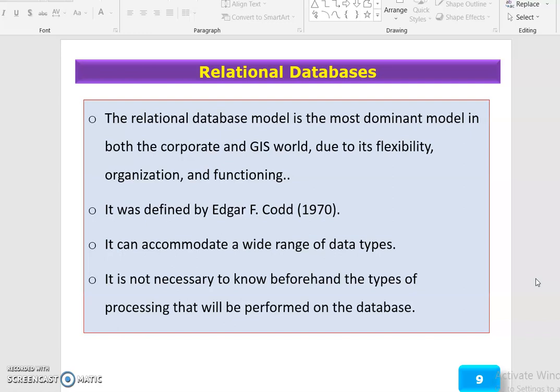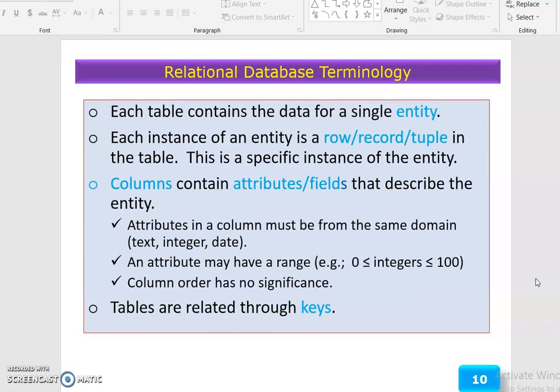Relational database terminology: Each table contains the data for a single entity. Each instance of an entity is a row, record, or tuple in the table. Columns contain attributes or fields that describe the entity. Attributes in a column must be from the same domain - text, integer, date. An attribute may have a range.